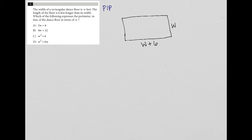Which of the following expresses the perimeter in feet of the dance floor in terms of W? Well, the perimeter of a rectangle is just the sum of each of its four sides. So I'm going to continue label here and say, well, this is also W plus six. This is also W.